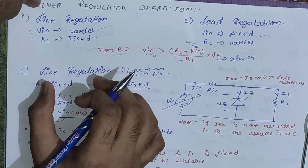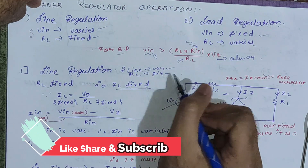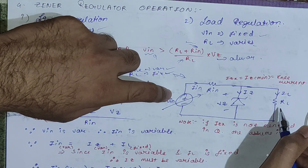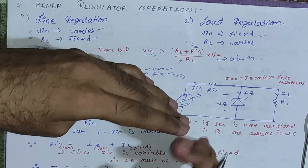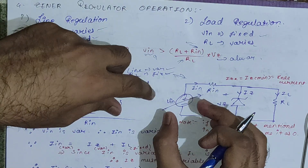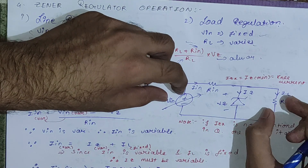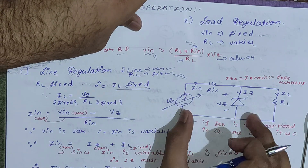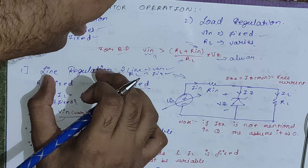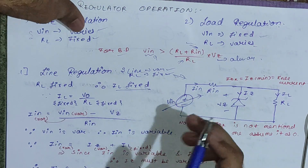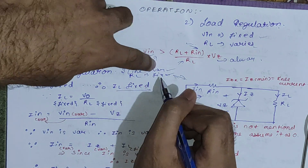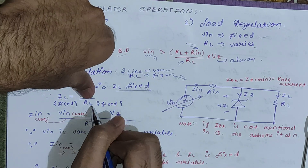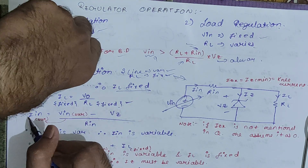For line regulation, the circuit shows Vin varying (indicated by an arrow) while RL is fixed. If RL is fixed, then IL is fixed, since IL = Vo / RL. In the circuit, if you see an arrow on a source or element, that element is varying. Since RL has no arrow, it is fixed. This identifies the circuit as a line regulation problem.